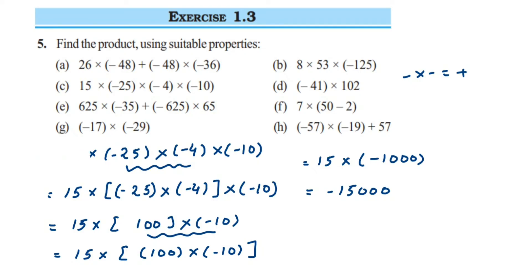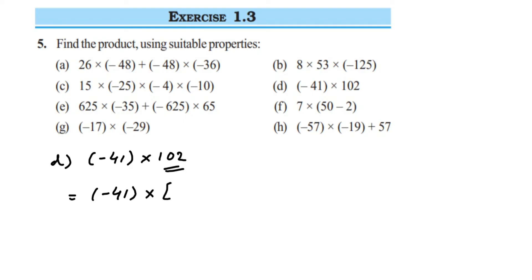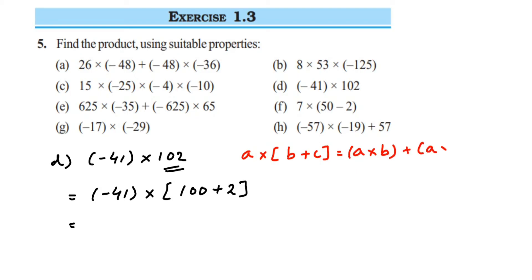We are not arranging from the start — we are multiplying the middle two terms and then proceeding, which is still applying commutative property. The next problem d is minus 41 multiplied by 102. We should not multiply directly. We write 102 as 100 plus 2. So it becomes minus 41 into 100 plus 2, and now we apply distributive property: a into b plus c.